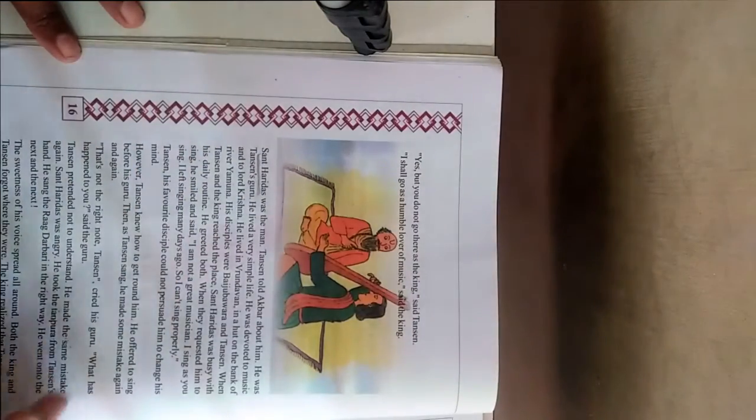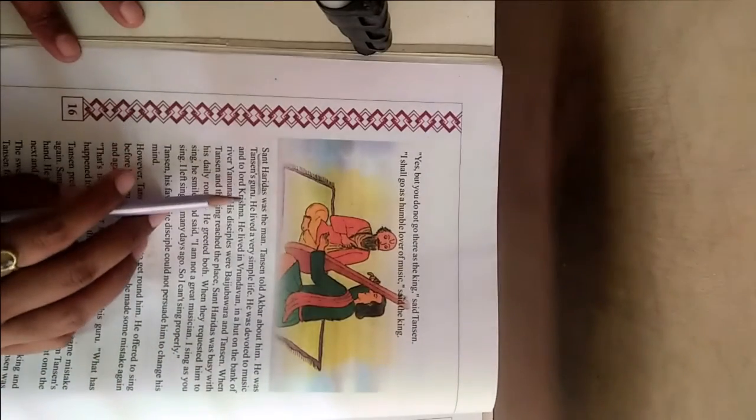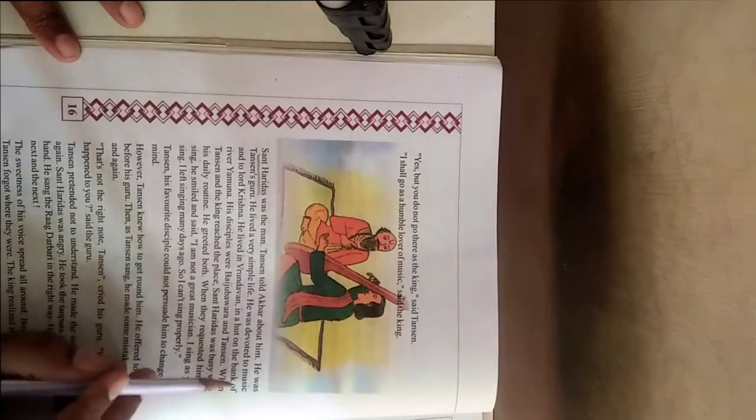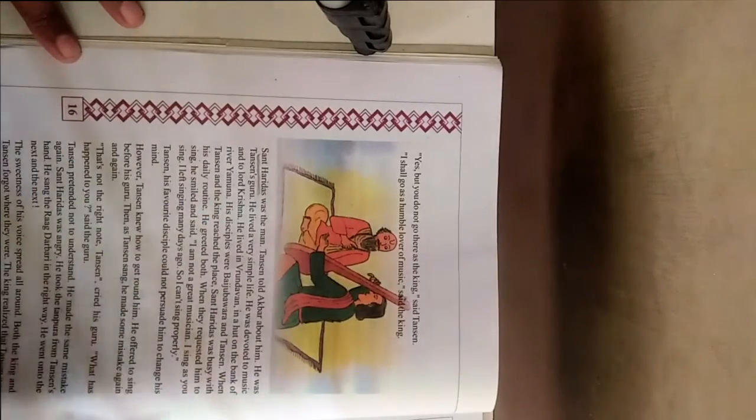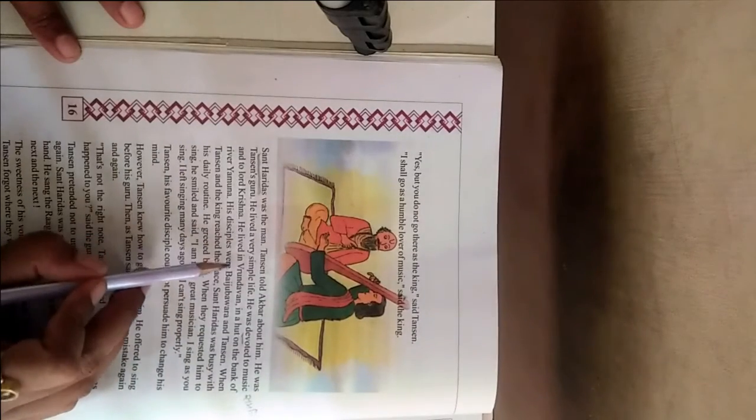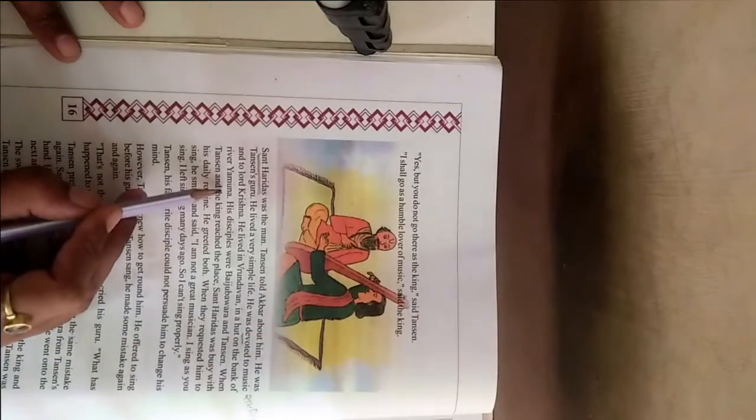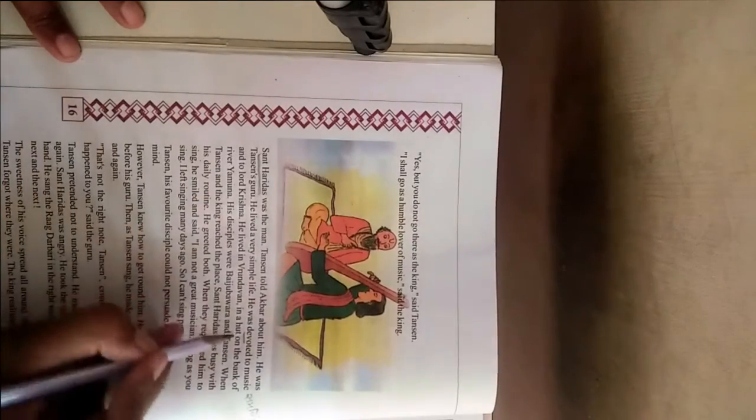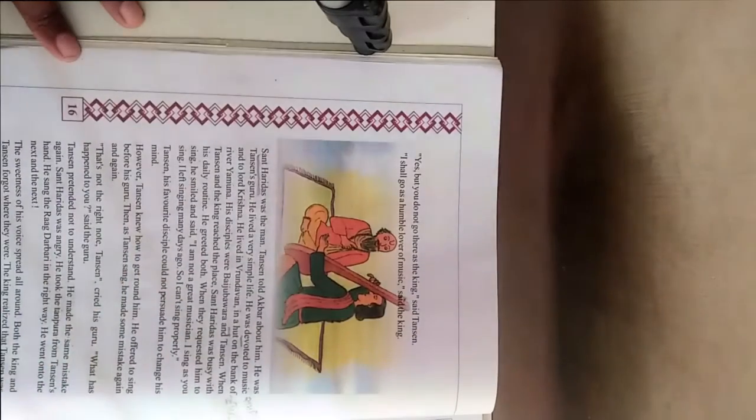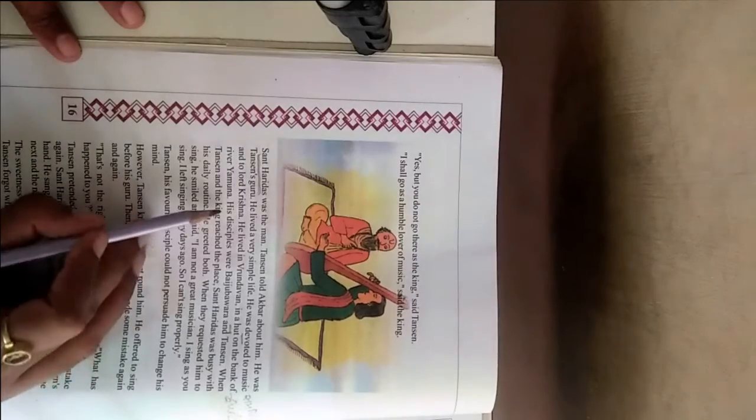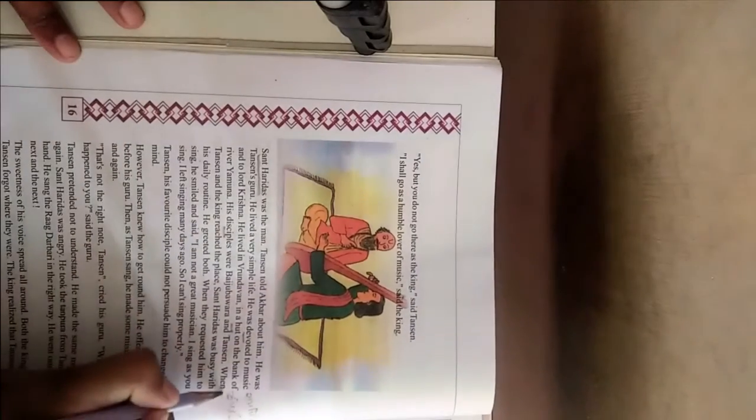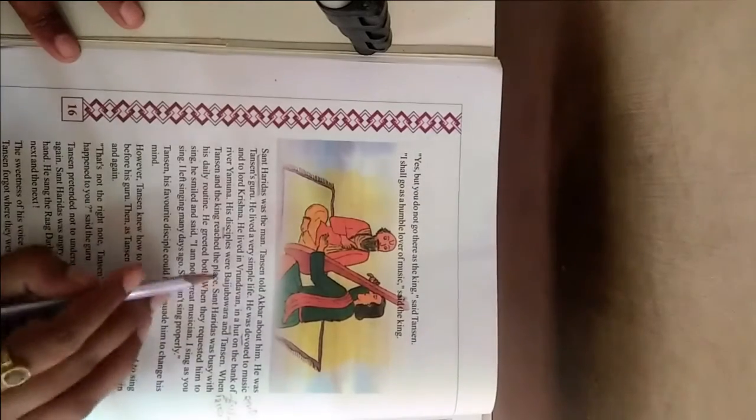Next. He lived in Vrindavan in a hut on the bank of river Yamuna. Hut means small cottage. His disciples were Baiju Bawra and Tansen. Two disciples. Disciple means student.